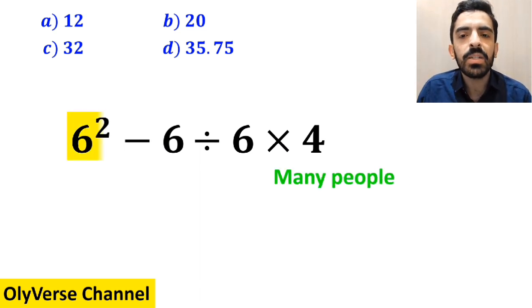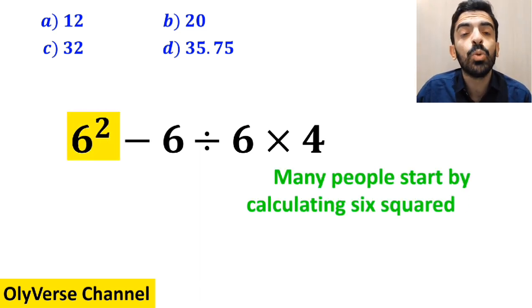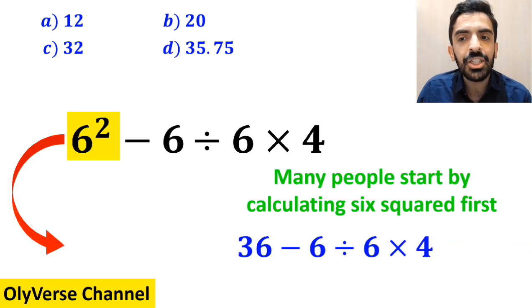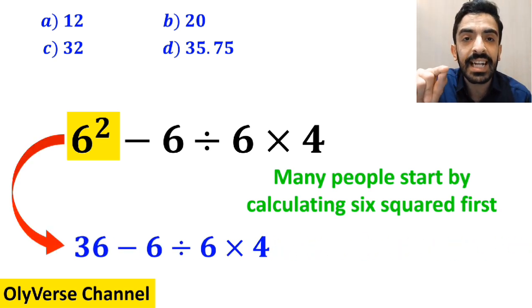To solve this problem, many people start by calculating 6 squared first, and instead of the original expression, they rewrite it as 36 minus 6 divided by 6 times 4.